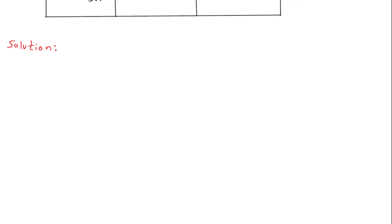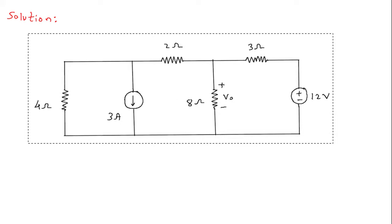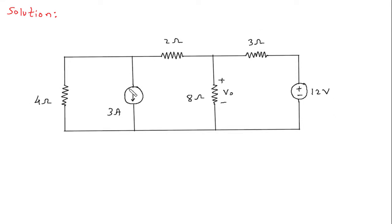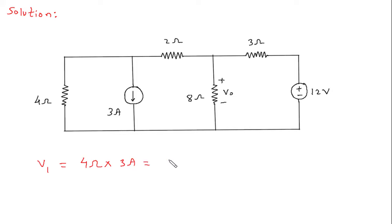First of all we will redraw the circuit. Now we have to convert this current source into its equivalent voltage source. Let's say this is voltage V1. So this will be 4 ohm into 3 ampere, so this will be 12 volt.